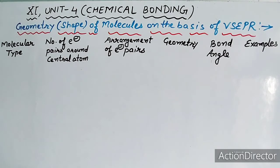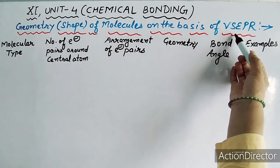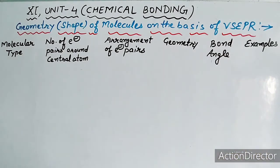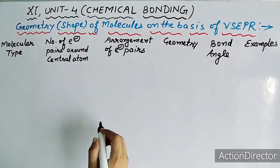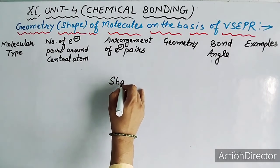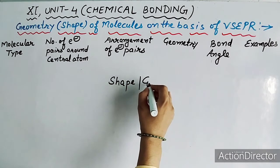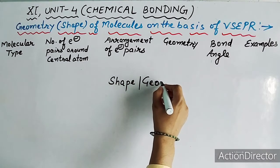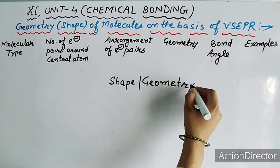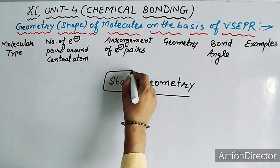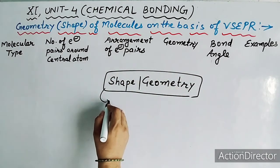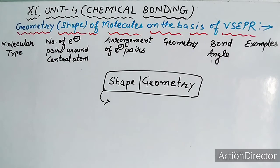Students, last video में हमने VSEPR theory के बारे में detail में उसके postulates को discuss किया था, और आज उसी के basis पर हम क्या निकालेंगे — geometry और shape of the molecule. सबसे पहले हमें पता होना चाहिए — what do you mean by the shape और geometry? Shape और geometry होती है: definite arrangement of atoms और group of atoms in the surrounding of the central atom.